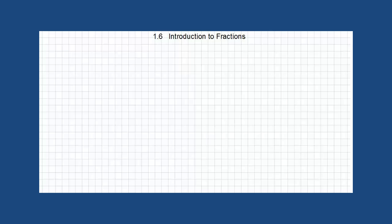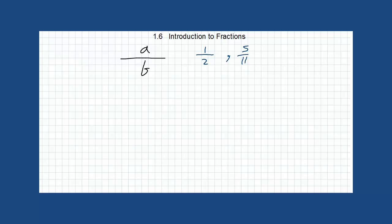A fraction is a ratio between two integers. Any two integers a over b written in this form, we call this a fraction — such as 1 over 2 or half, 5 over 11, 13 over 50, and so on. For example, 3 over 4, or 3 quarters, is a fraction.